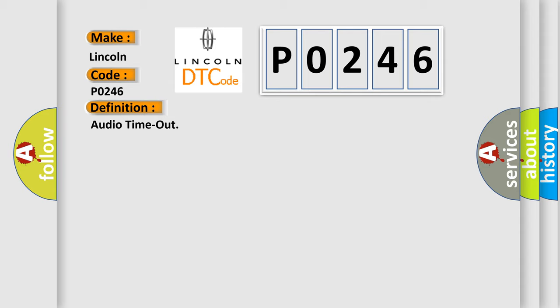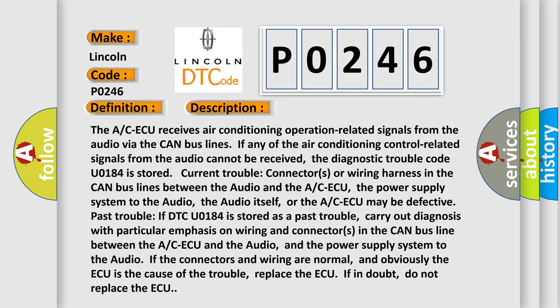The ACAQ receives air conditioning operation related signals from the audio via the CAN bus lines. If any of the air conditioning control related signals from the audio cannot be received, the diagnostic trouble code U0184 is stored. Check current trouble connectors or wiring harness in the CAN bus lines between the audio and the ACAQ. The power supply system to the ACAQ may also be defective. If DTC U0184 is stored as a past trouble, carry out diagnosis with particular emphasis on wiring and connectors in the CAN bus line between the ACAQ and the audio, and the power supply system to the audio. If the connectors and wiring are normal and the ACAQ is the cause of the trouble, replace the ACAQ. If in doubt, do not replace the ACAQ.